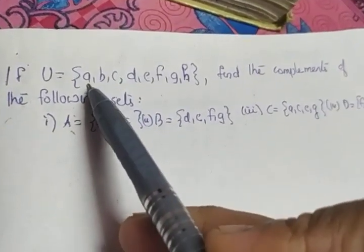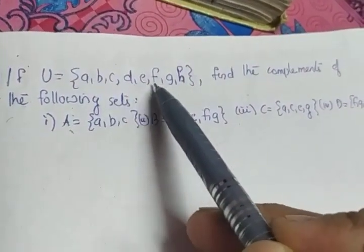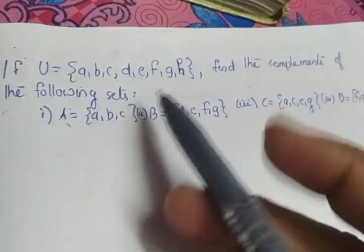The next question is: if U equals {a, b, c, d, e, f, g, h}, find the complements of the following sets.